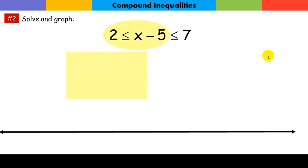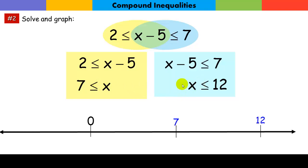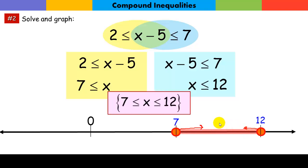Just like before, we take this one at a time. For the first inequality, add five to both sides — I have one boundary point. Add five to both sides of the second — I have the other boundary point. My two boundaries are at seven and twelve. Notice they're both inclusive, so I fill them in. This says x is greater than or equal to seven, and this one says x is less than or equal to twelve. That's my solution set.